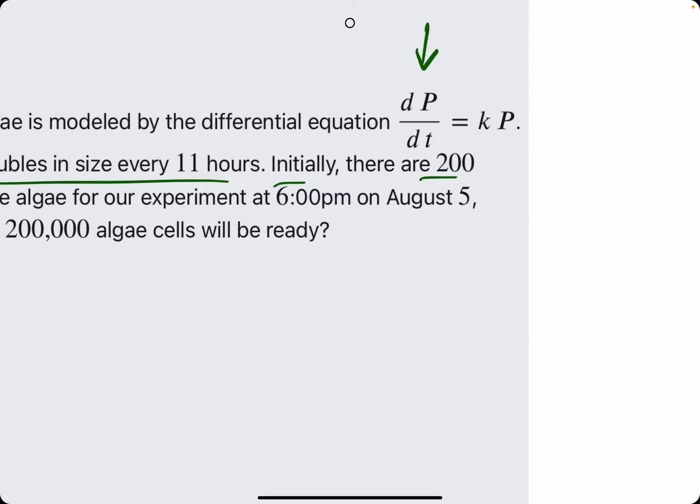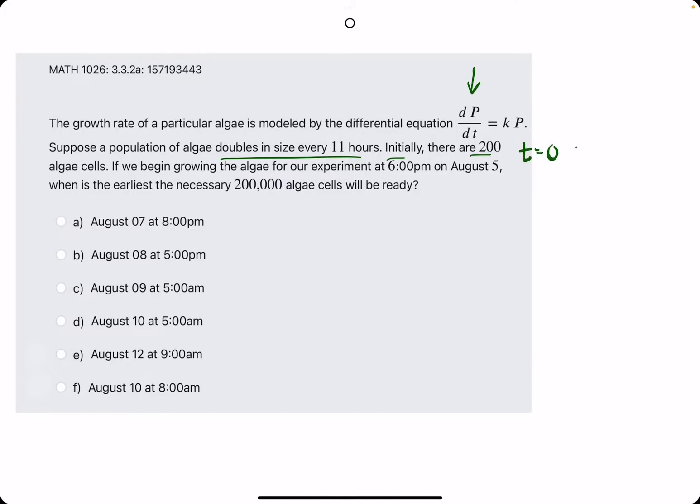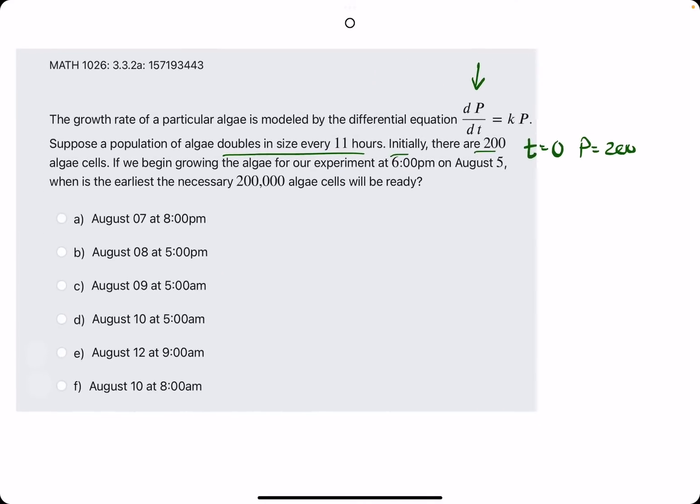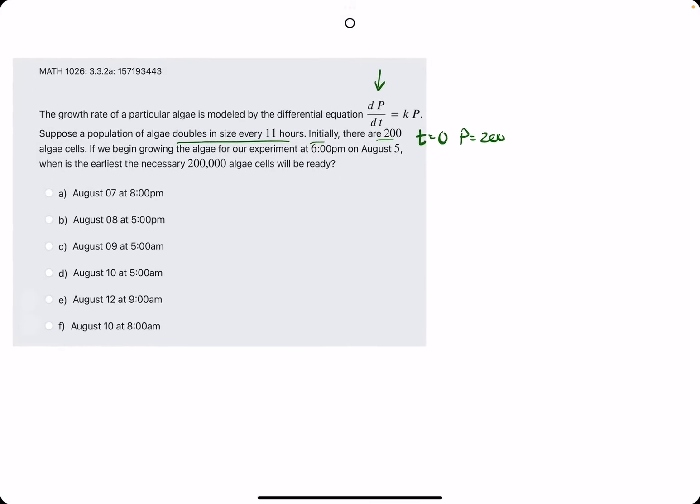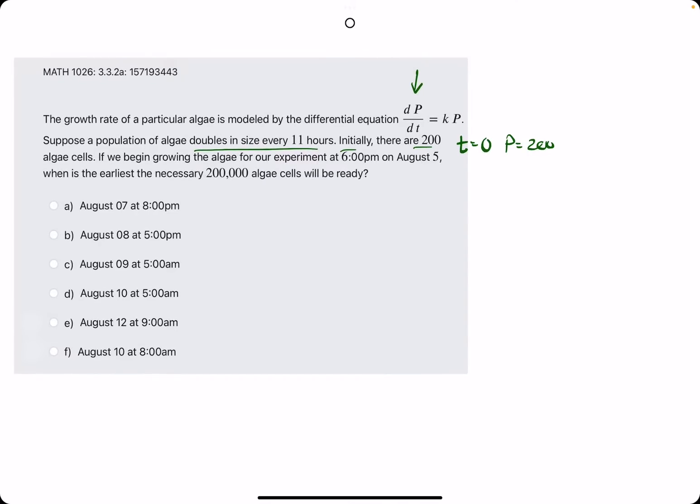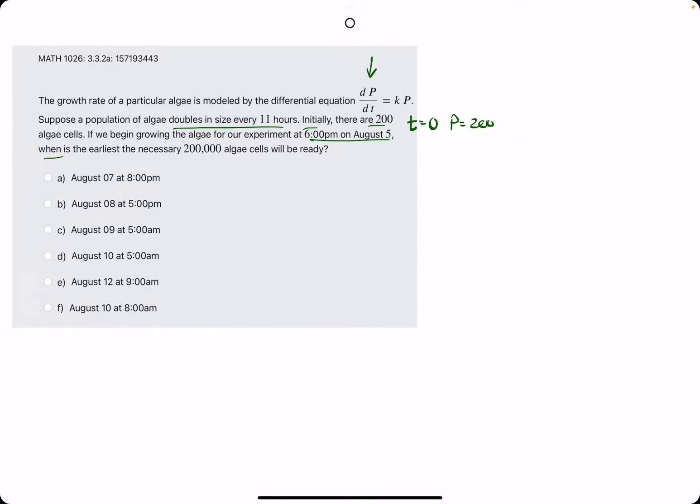I think we'll use that later. But when T equals zero, P equals 200. So it's our initial value that we will use to essentially solve for C, our constant. And then we'll use this doubles every 11 hours to help us out later on. And then they say if we begin at 6 p.m. on August 5th, when, so we're looking for a time, is the earliest necessary 200,000 algae cells. When are they going to be ready, basically. So let's jump to it.